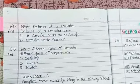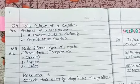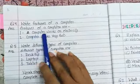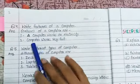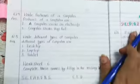What are the features of a computer? The features of a computer are: First, a computer works on electricity. The computer works very fast.